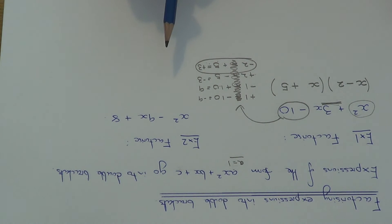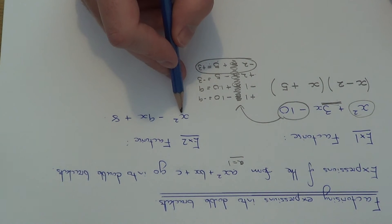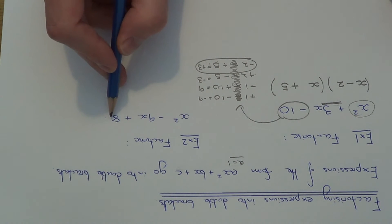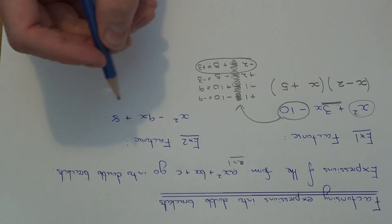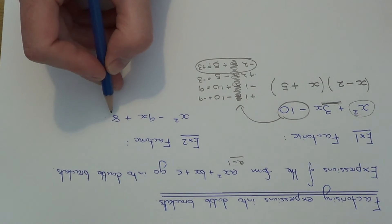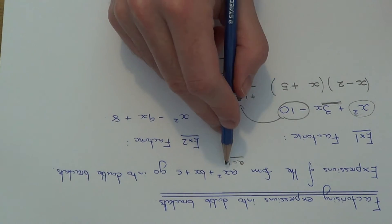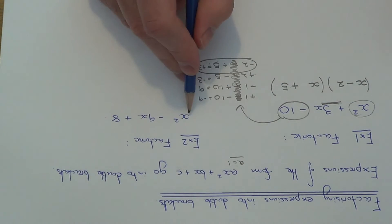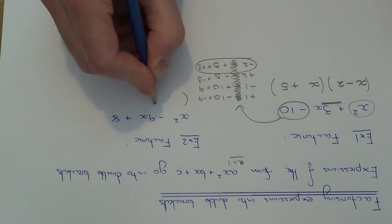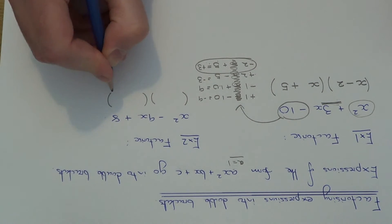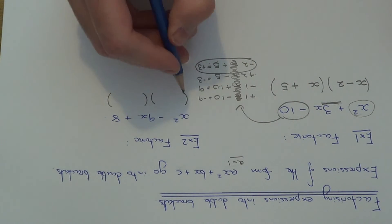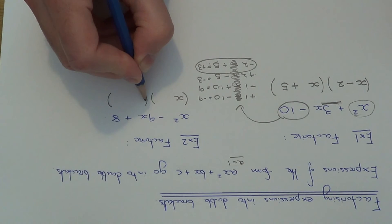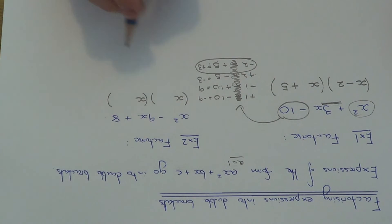So let's move on to example 2. So this time we need to factorize x squared minus 9x plus 8. So again, we know it's a double bracket expression, because it takes this form up here, where a is equal to 1. So if we write down our two brackets, again we've got x squared here, so we'll have to put an x and an x there to make it x squared.